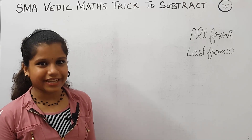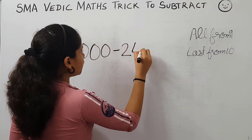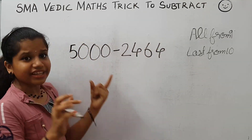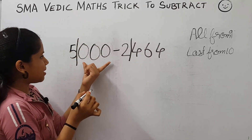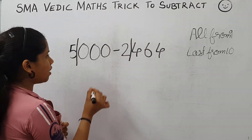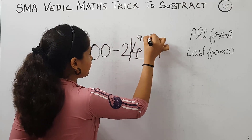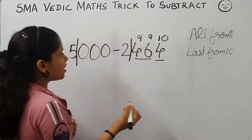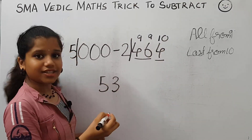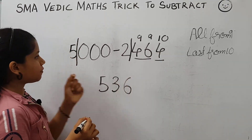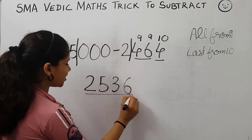Now let's take a different type of question: 5,000 minus 2,464. Here there are only three zeros but four digits, so we put a slash here and here to make the number of digits and zeros equal. We apply the rule all from 9 and last from 10. 9 minus 4 is 5, 9 minus 6 is 3, 10 minus 4 is 6. Now subtract 5 and 2, then subtract 1: 5 minus 2 is 3, and 3 minus 1 is 2. The answer is 2,536.